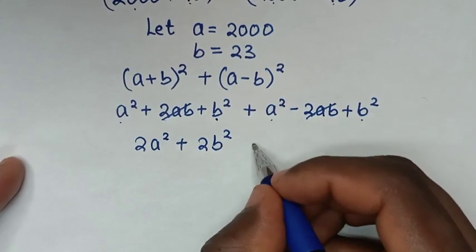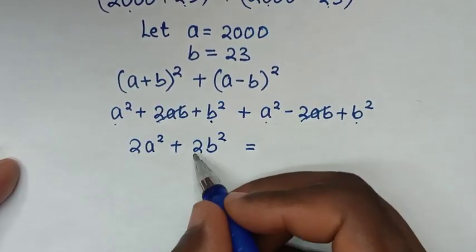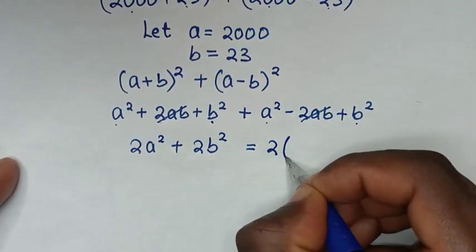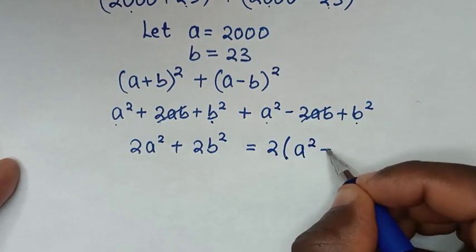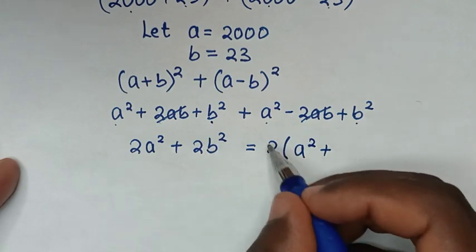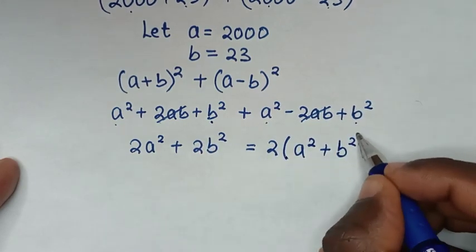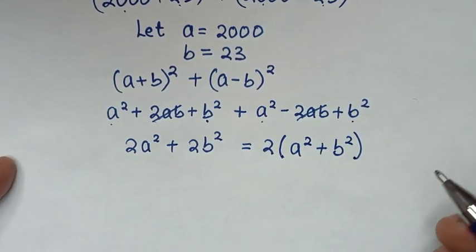We can factor out 2, giving us 2(a² + b²), which equals 2(2000² + 23²).